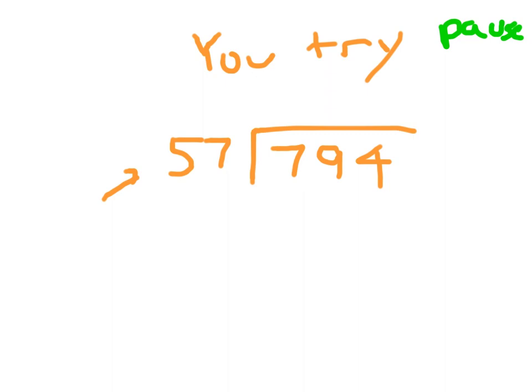We think about 57 going into 7—no, we can't do that. Did you put the 1 above the 9? 1 times 57 is 57. 79 minus 57 is 22. I bring down the 4. I was thinking of this as 60. So how many times does 60 go into 224?